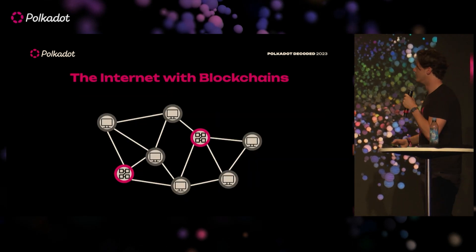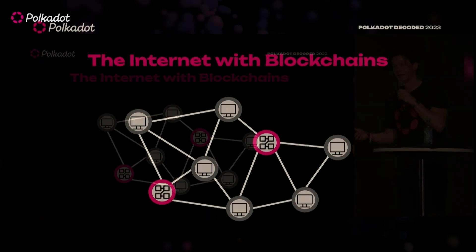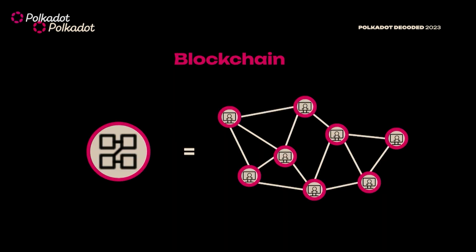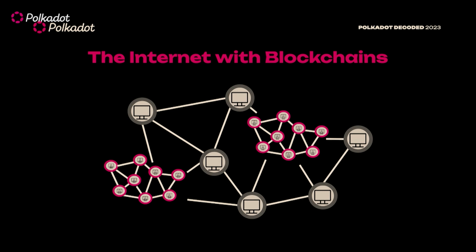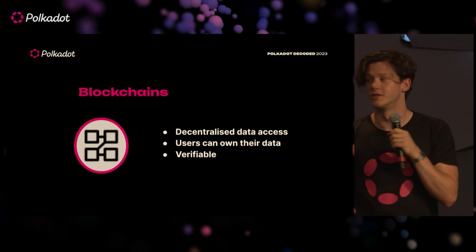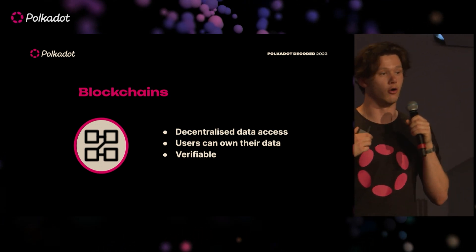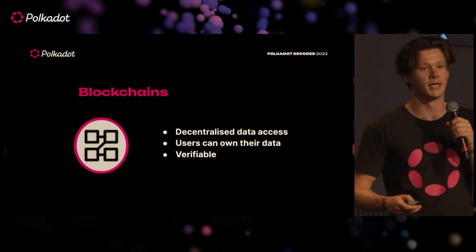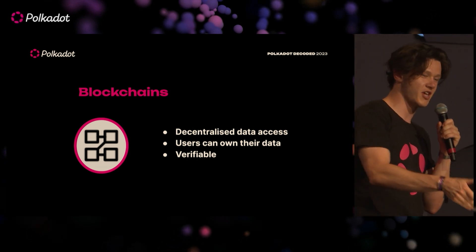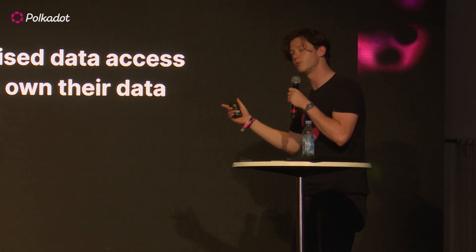The blockchain solution: instead of companies holding all this data, the data lives on the blockchain. A blockchain is a network of nodes — nodes being computers — that all have a copy of the database. When we interact with this blockchain, we can talk to all these nodes, so data access is very decentralized. We can own our data on the blockchain, and when we interact with it, we can verify whether a piece of data is actually within the database.